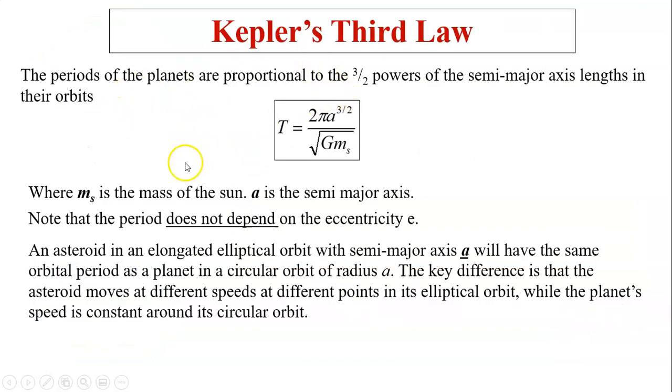The third law states the relationship between period and the semi-major axis. This relationship is very similar to uniform circular motion, how period is related to the radius of the circle. So T is directly proportional to the semi-major axis to the power of 3 over 2. In this equation, MS is the mass of the sun, A is the semi-major axis. Pay attention, the eccentricity is not in this equation because it does not matter.